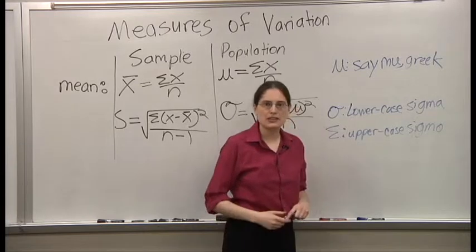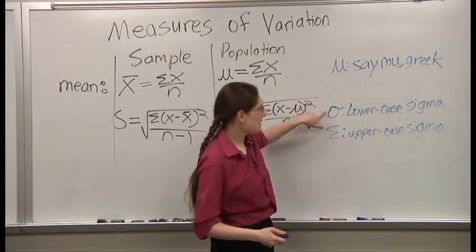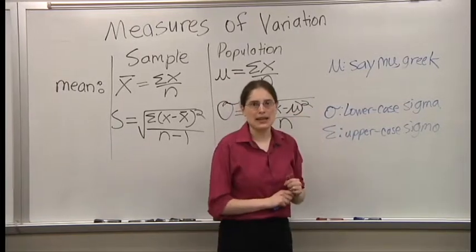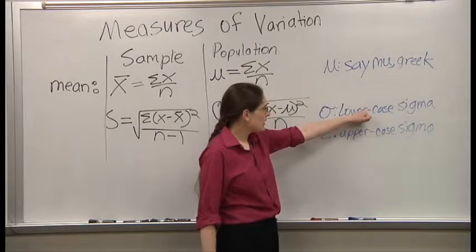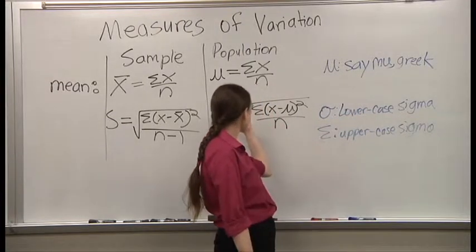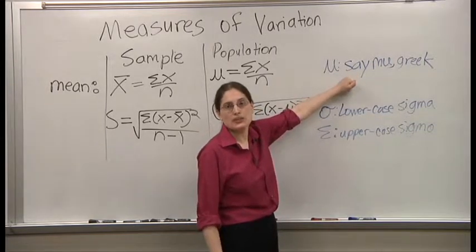We've learned three Greek letters. This is mu. This is lowercase sigma and this is uppercase sigma. This one means add them up. This is population standard deviation. And this is population mean.